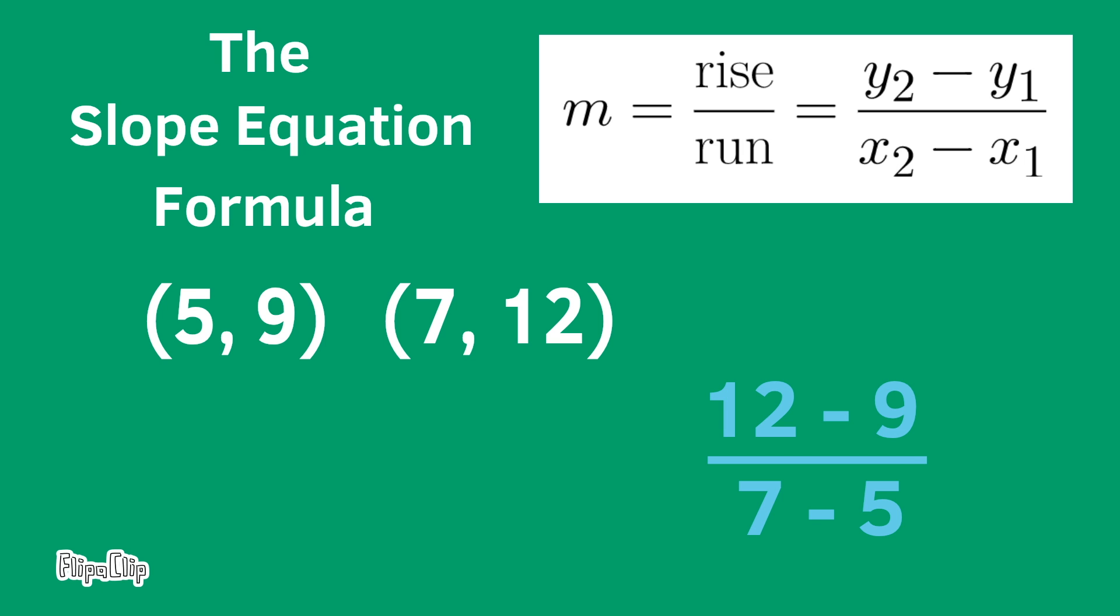So we have y₂ minus y₁ which is 12 minus 9, and that's 3. And we have x₂ minus x₁ which is 7 minus 5, and that's 2. The slope of the line that these two sets of coordinates represent is 3 over 2, or 3 halves. Remember, m represents slope, so we can say m equals 3 halves.